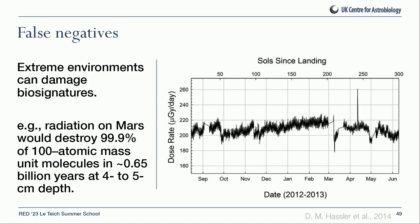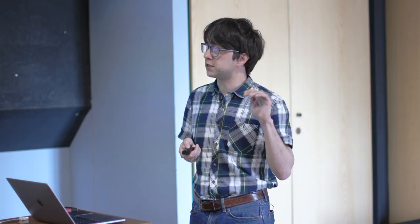That's most of what I wanted to say about false positives. Just before I finish, I want to say a few words about false negatives. A general point is that extreme environments can damage biosignatures. The radiation environment on Mars has been calculated to destroy 99.9% of 100 atomic mass unit molecules in about 650 million years within the top few centimeters — this is why we have to get below the surface. The ionizing radiation dose actually measured in Gale Crater is very high, which is why we need to dig below or look at recently exposed material.